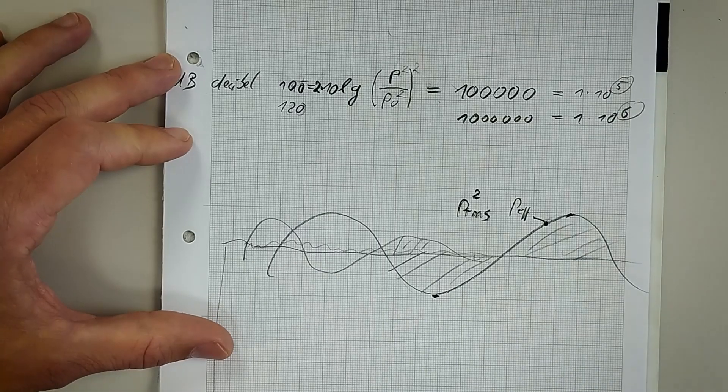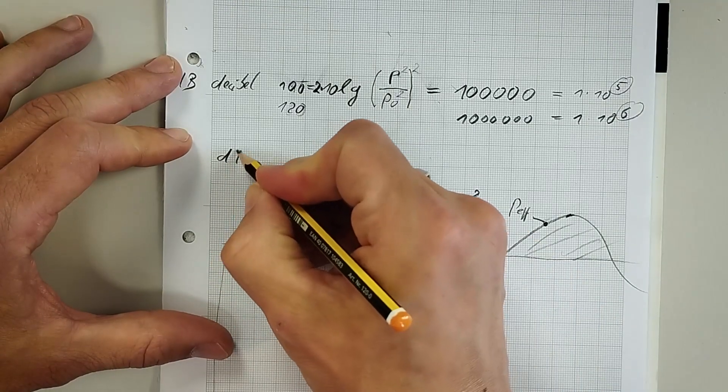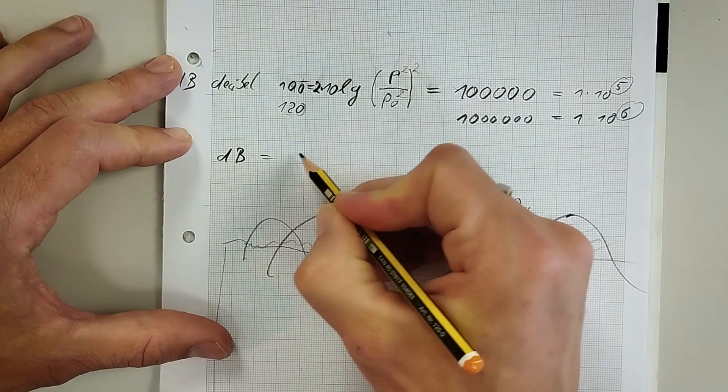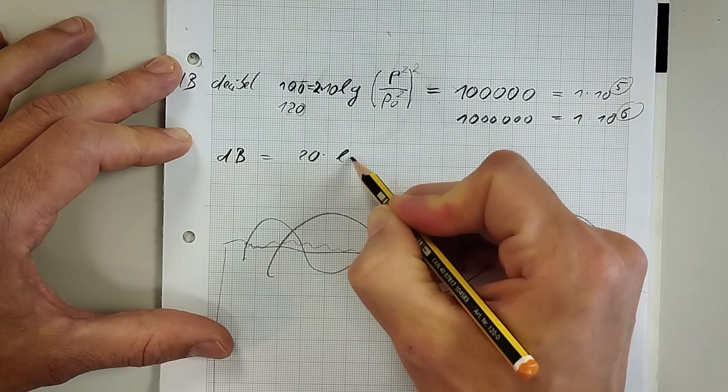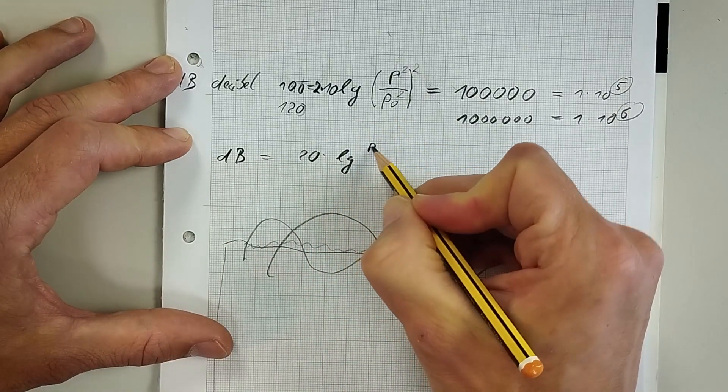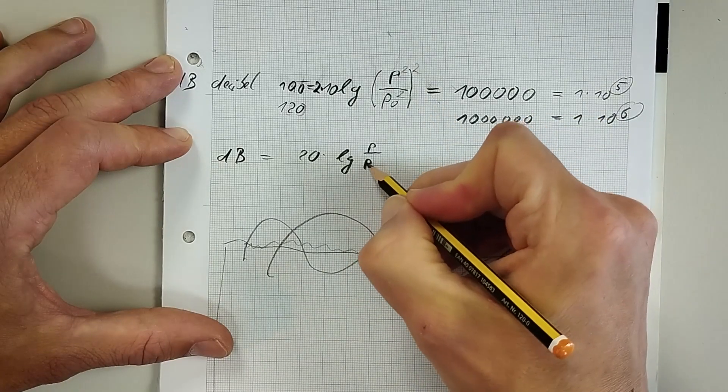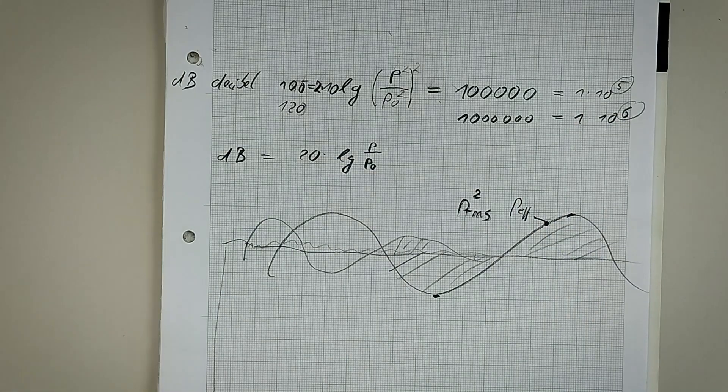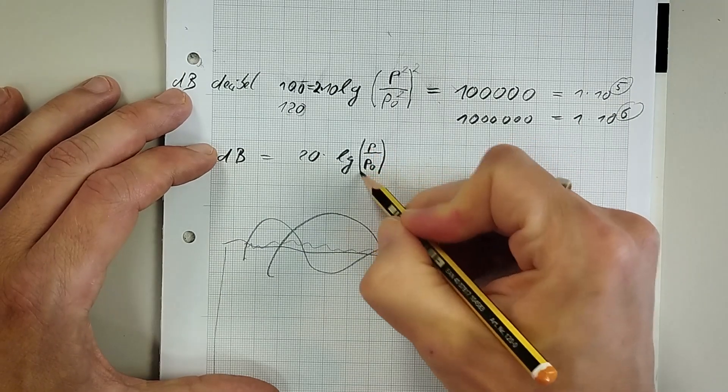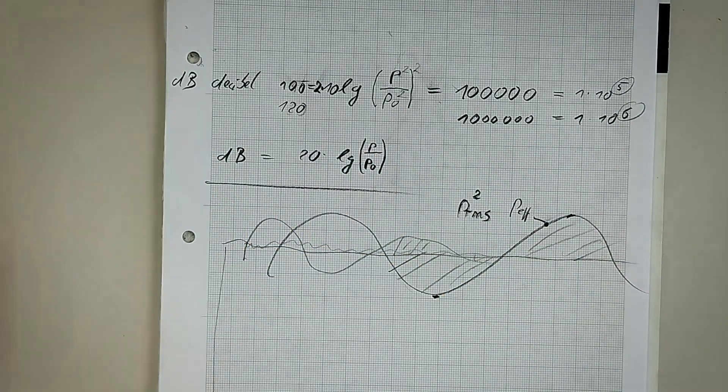So the final equation we need to calculate the sound pressure level in decibel is this one. dB value is 20 times the 10th logarithm of the measured effective pressure of a sound in relation to our reference value, the sound pressure at which we just can hear something, our hearing threshold. That is the formula you should have on mind talking about acoustics.